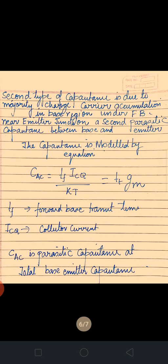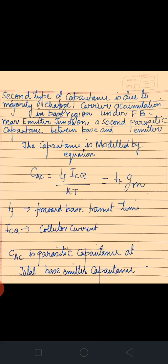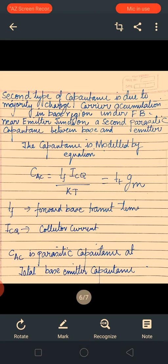The second type of capacitance is due to majority charge carrier accumulation in the base region under forward bias near the emitter-base junction. This is also a parasitic capacitance developed between the base and emitter region. It is modeled by the equation: CAC = TF·ICQ / (KT), which is equivalent to TF·Gm, where TF is the forward base transit time, ICQ is the quiescent collector current, and Gm is the transconductance. CAC is the total base-emitter parasitic capacitance.